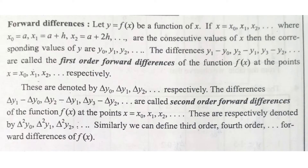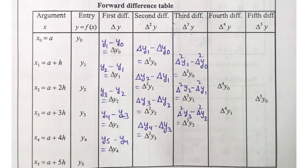We now look at the first order and second order forward differences. In the table, the x values are x0, x1, x2, x3, x4, x5, and the corresponding y values are y0, y1, y2, y3, y4, y5. This table structure is clear.